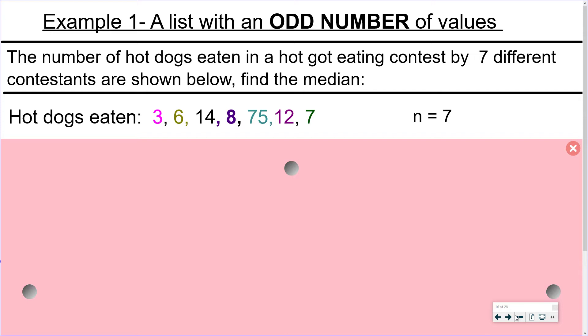Example 1: A list with an odd number of values. The number of hot dogs eaten in a hot dog eating contest by seven different contestants are shown below. Find the median.